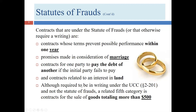We also talked about a fifth category that actually isn't part of the statute of frauds but is part of the Uniform Commercial Code, the UCC. That requires any contract between a merchant and a non-merchant for the sale of goods — if it totals more than $500, it has to be in writing.